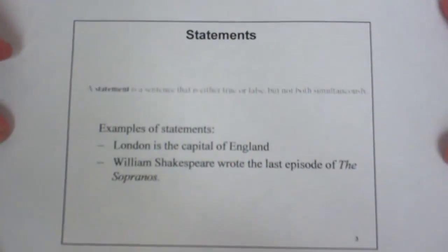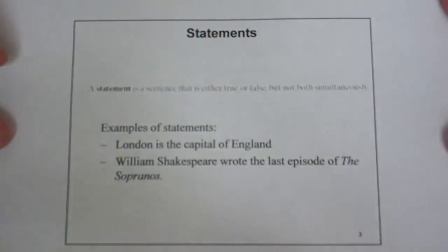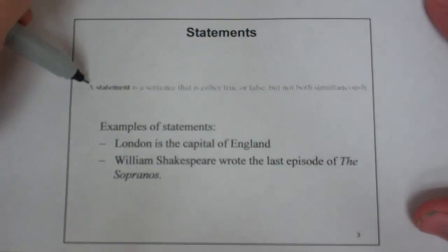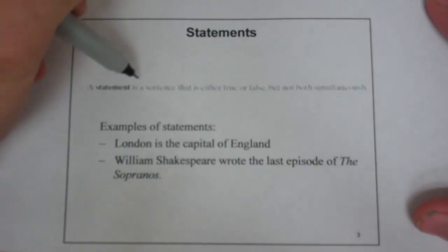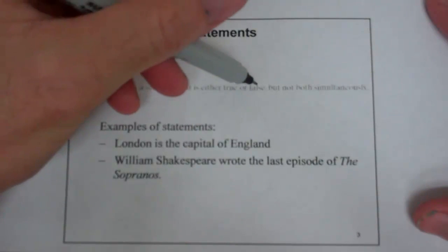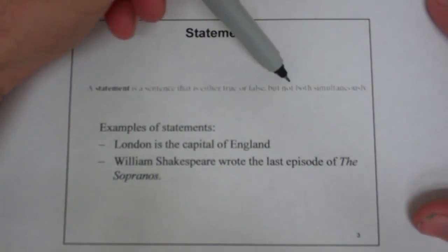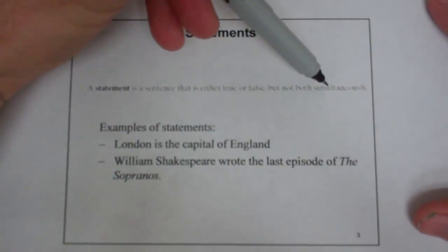What does it mean to have a statement in mathematics? A statement is a sentence that is either true or false, but cannot be both simultaneously.